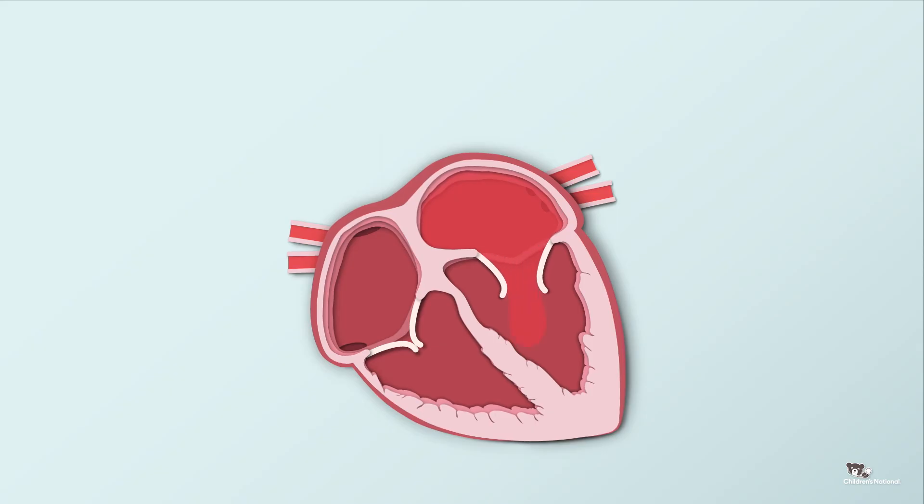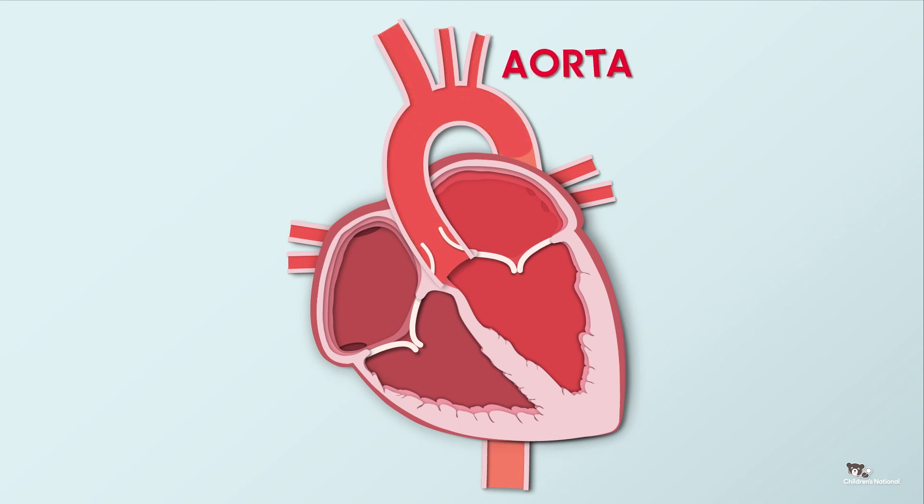And then, it goes through the mitral valve into the left ventricle. When it fills up the ventricle, the blood is pumped out of the heart through a vessel called the aorta, and sends oxygen to the entire body.